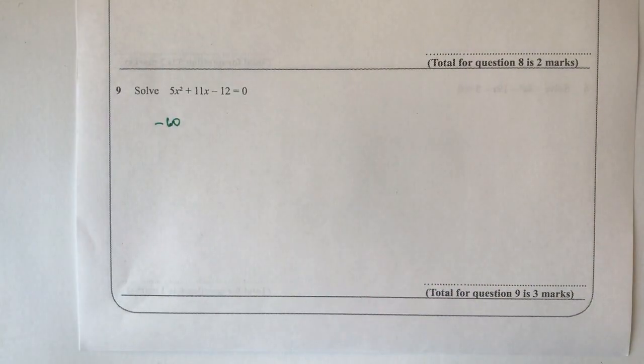And then what I'm looking for is two factors of minus sixty that when I multiply them together make minus sixty, and when I add them together make plus eleven.